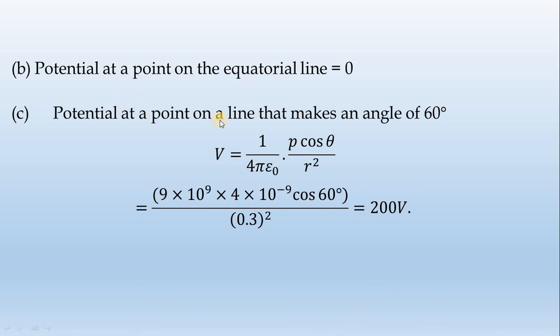The potential at a point on a line that makes an angle of 60 degrees: V equals 1 divided by 4π epsilon naught, P cos theta over R squared. 9 × 10^9, 4 × 10^-9, cos 60 degrees divided by 0.3 squared equals 200 volts.